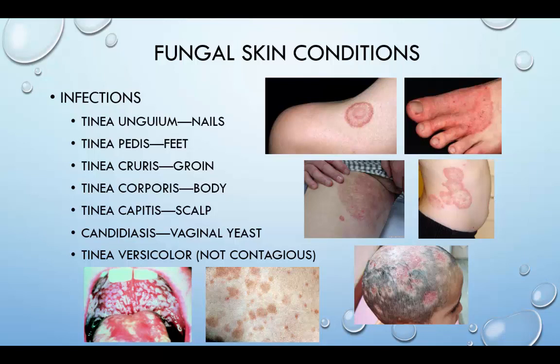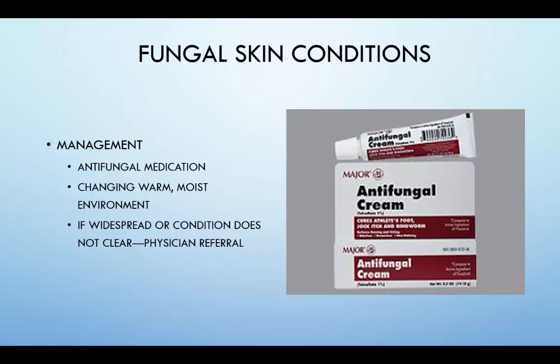Tinea versicolor is a yeast infection common to active individuals. It is often seen on the trunk, upper arms, neck, abdomen, groin, and thighs, and may resemble freckles — it is referred to as sunspots. Tinea versicolor is best noted after exposure to the sun; while the rest of the skin tans, the area of tinea versicolor will not. Candidiasis is caused by the yeast Candida albicans and results in infections of the skin, mucous membranes, or even the vagina. It is more common in women who wear a swimsuit or competition uniform for long periods of time. Lesions appear as deep, beefy red and are bordered with small red satellite pustules. Management for fungal skin conditions includes antifungal medication and changing warm, moist environments. If the condition is widespread or does not clear, a physician referral is warranted.